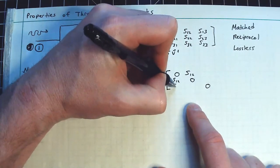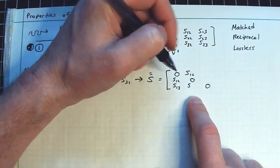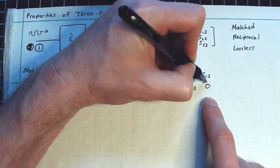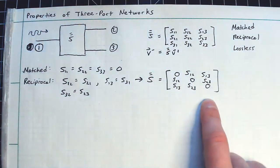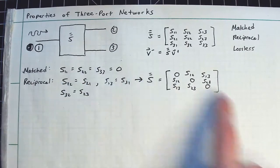And this becomes S13, S23. So this is what the matrix will look like if it is both matched and reciprocal.